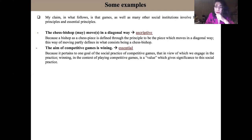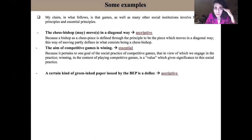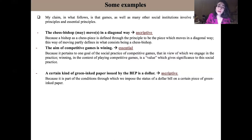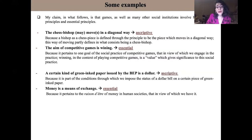Now let's take another pair of examples about money as an institutional entity. That a certain kind of green inked paper issued by the Bureau of Engraving and Printing is a dollar is an ascriptive principle, because it is part of the conditions through which we impose the status of a dollar bill on a certain piece of paper. But that money is a means of exchange is an essential principle, because it pertains to the point of the practice — that in view of which we have money in human society.